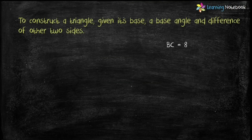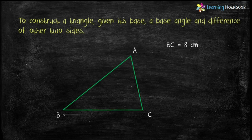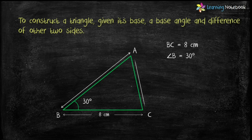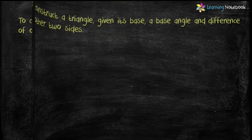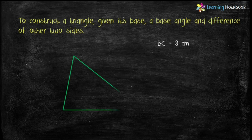In a construction question, if we are given base BC, angle B as the base angle, and AB minus AC equals 2 centimeters, then it will be Case 1, which is the construction when AB is greater than AC. In such a case, the triangle will look as shown here.